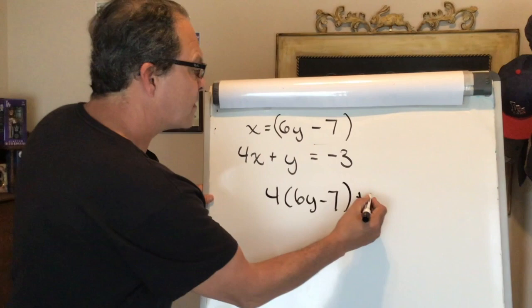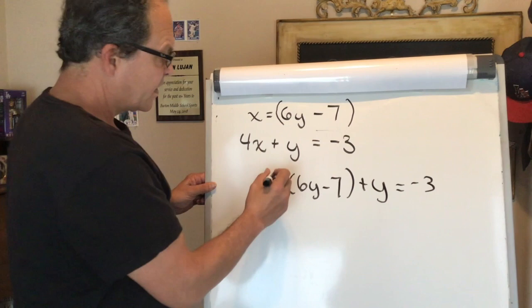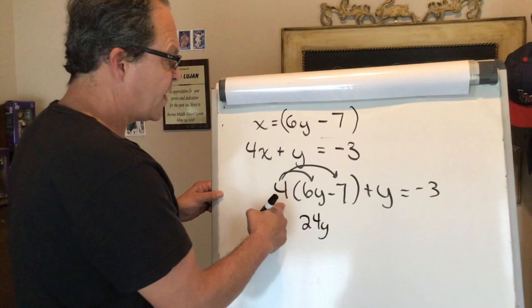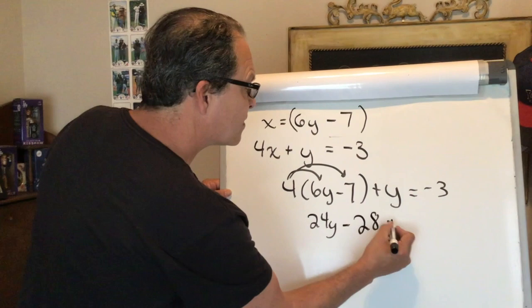Now I have to distribute the 4. I have to multiply to both terms inside the parentheses. 4 times 6 is 24y, then 4 times negative 7 is negative 28, plus y equals negative 3. There's really one y here.